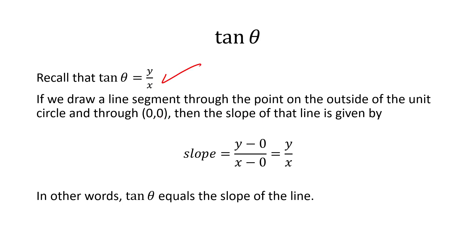Imagine that you drew a line segment through (0,0). We know that slope is equal to y2 minus y1, so that would be y minus 0, and then over x2 minus x1, so that would be x minus 0. Now, y minus 0 over x minus 0 is equal to y over x. In other words, the slope of a line through the origin and the point on the outside of the unit circle is equal to y over x. But tan theta is equal to y over x, so that means tan theta equals the slope of the line. That's good news.